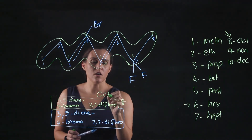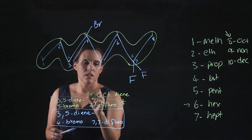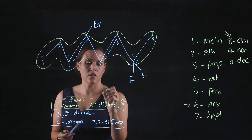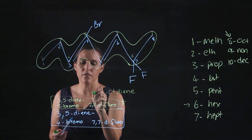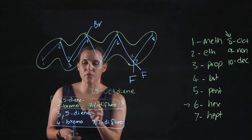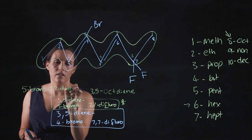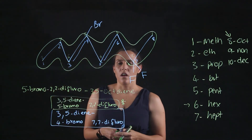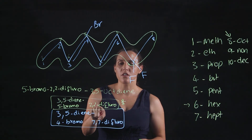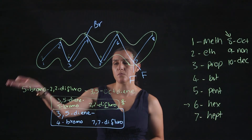Putting this all together, we've got an octadiene with a 3,5- position. So it's 3,5-octadiene. Now putting the substituents at the front — F and B alphabetically, so it would be 5-bromo-2,2-difluoro-3,5-octadiene. Remember when doing alphabetical order, we don't count the 'di' or 'tri' — we use the actual name of the functional group. That's why I went with F and not D when working out the alphabetical order of the substituents.